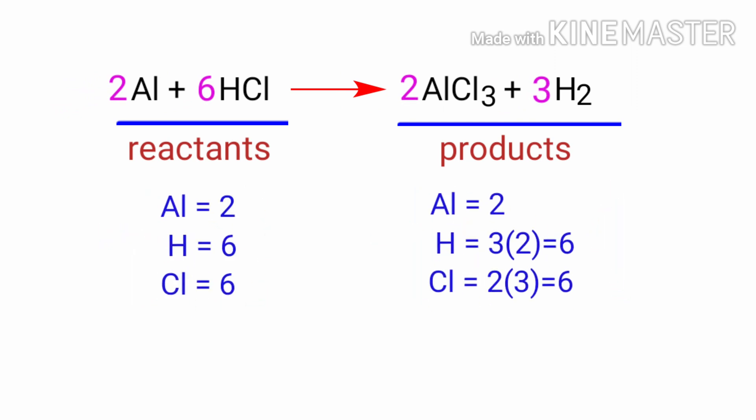The equation is now balanced. There are two Aluminium atoms, six Hydrogen atoms and six Chlorine atoms on both sides.